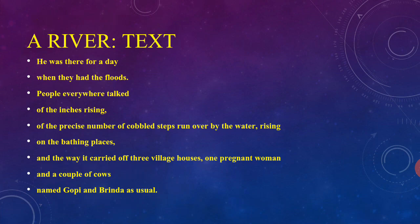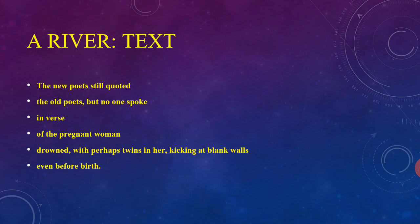And the way it carried off three village houses, one pregnant woman, and a couple of cows named Gopi and Brinda. As usual, the new poets still quoted the old poets, but no one spoke in verse of the pregnant woman.